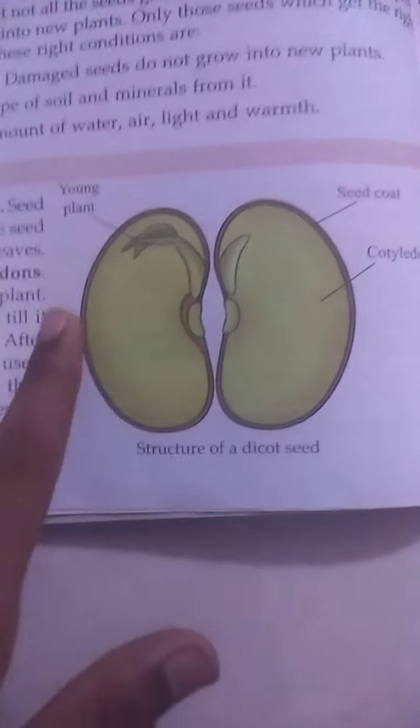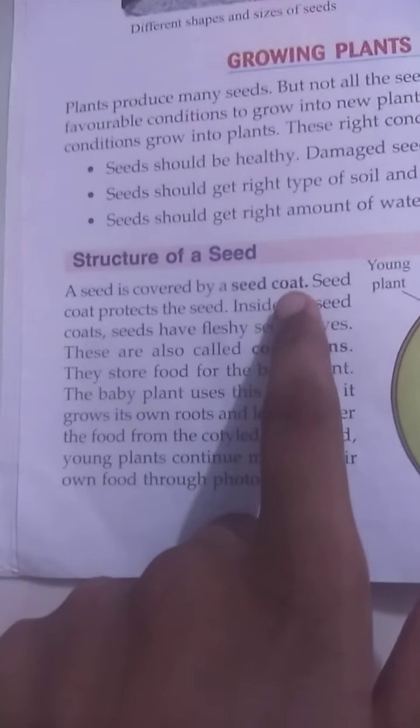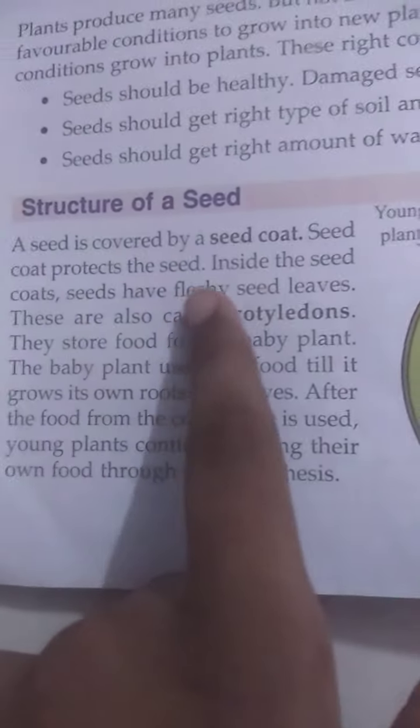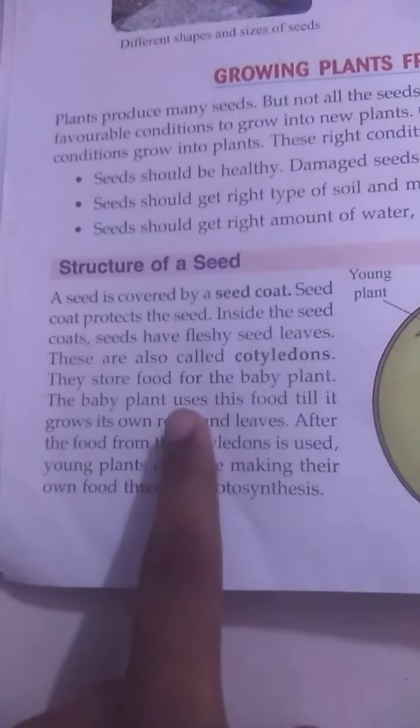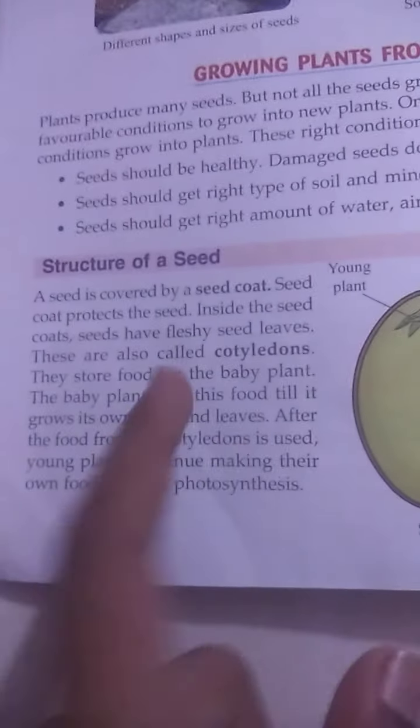Structure of seeds: a seed has a seed coat which protects the seed. Inside the seed, there are fleshy seed leaves which store food for the baby plant. The baby plant uses this stored food until it grows its own roots and leaves.